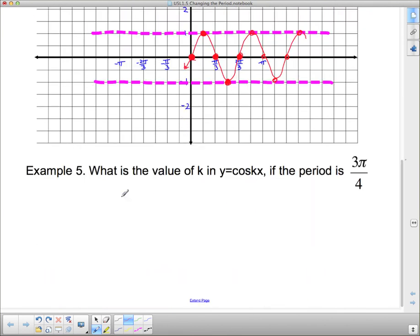Now, what other question can I ask you to do with period? I can ask you something like this. What is the value of k in y equals cos(kx) if this is our period? Well, we need to remember that period equals 2π divided by k. So in this case, our period is given to us. So we've got 3π/4 equals 2π/k. Now we just have to solve for k. We can solve for k by cross multiplying if you wish. So we get 3πk and that's going to equal 8π on this side. And then if I divide both sides by 3π, I get k equals 8π divided by 3π. The π's are going to cancel and I'm just going to be left with 8 over 3. So therefore, y equals cos of 8/3 x.